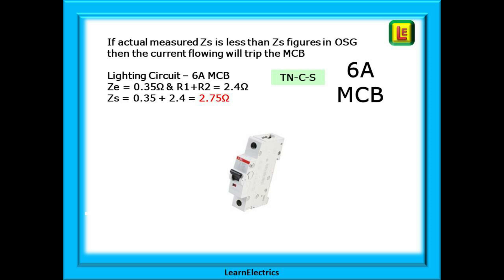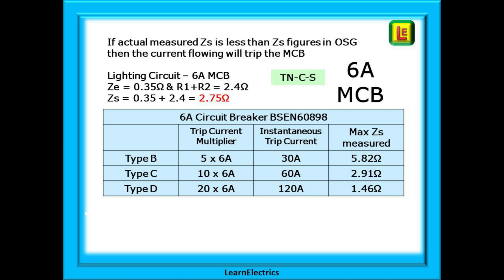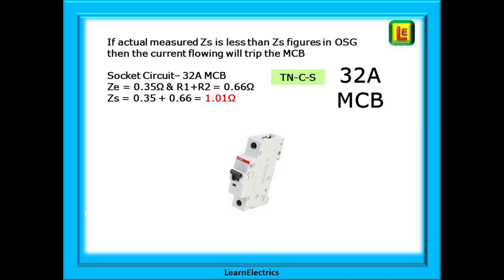If we use a lighting circuit as an example, a 6 amp MCB is to be installed. The ZE is 0.35 ohms and R1 plus R2 is 2.4 ohms. Adding these together, we have 2.75 ohms for ZS. If we now look at the maximum ZS values for the 6 amp types, we can see that at 2.75 ohms, the actual ZS is well below the maximum of 5.82 ohms for a type B breaker and just below the maximum limit for a type C. Both the types B and C 6 amp breaker will operate correctly. However, the type D does not meet the criteria.